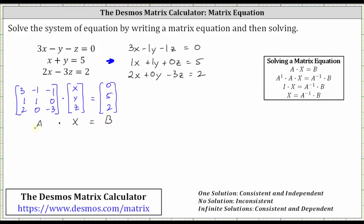Now we want to solve this matrix equation for matrix X. To do this, we find A inverse and perform the matrix multiplication on both sides. A inverse times A times X is equal to A inverse times B.